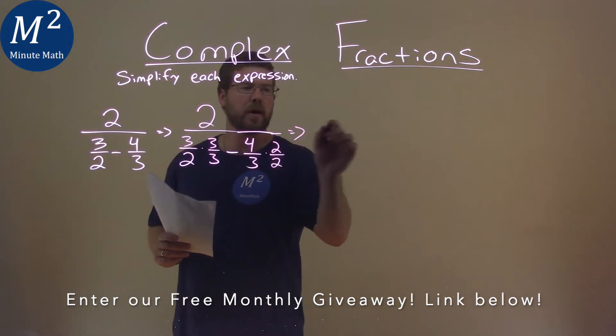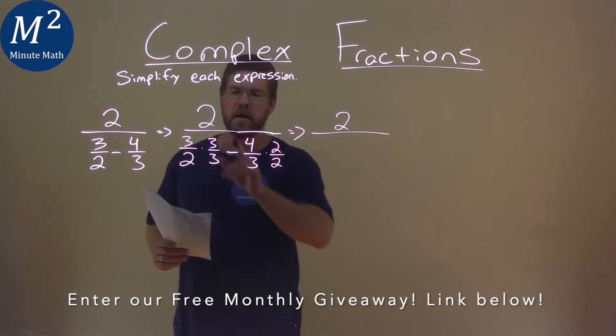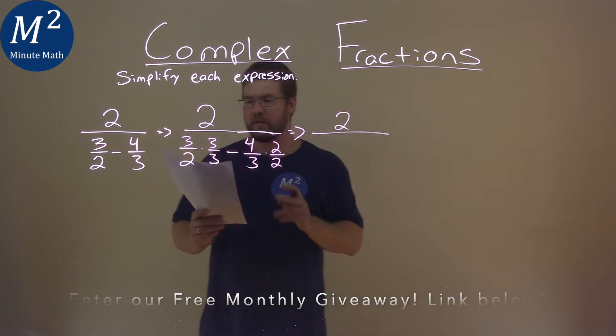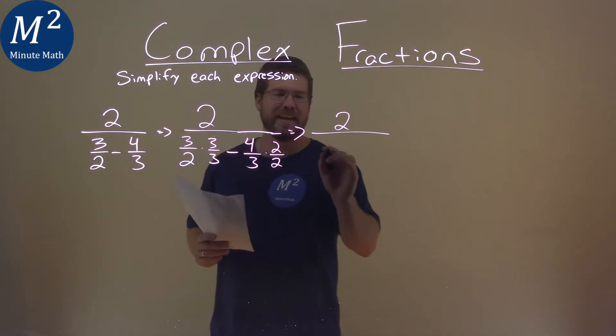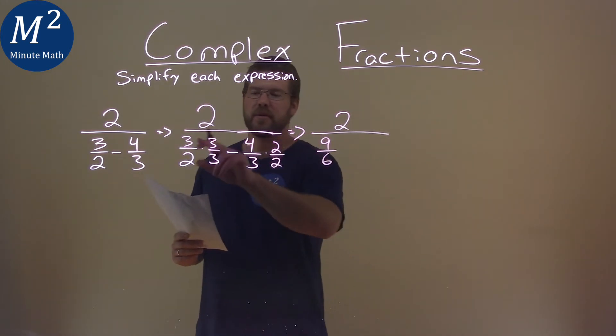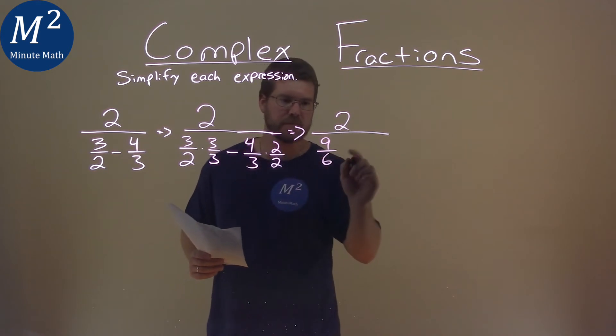From here, we can multiply it out. 2 stays on top. 3 over 2 times 3 thirds is 9 sixths. 3 times 3 is 9, 2 times 3 is 6. Same thing: 4 times 2 is 8, and 3 times 2 is 6 again.